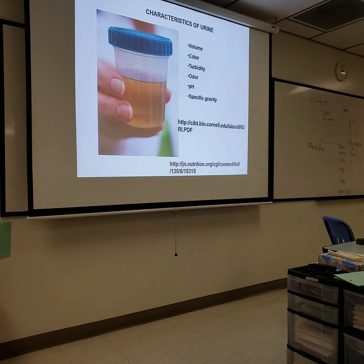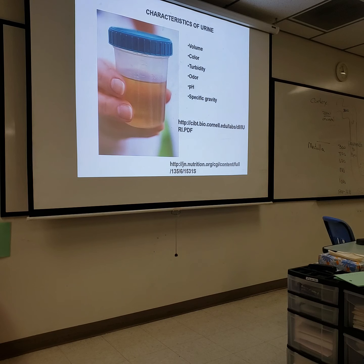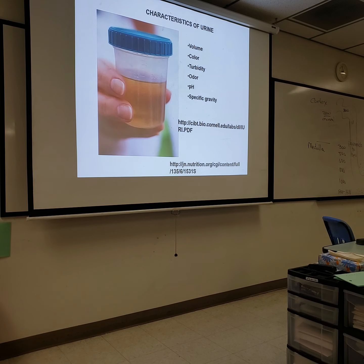As you can see over there on the fake urine, we can measure the volume. Minimum volume should be about 30 cc an hour, or about a cup every eight hours. Most of us produce more than that.